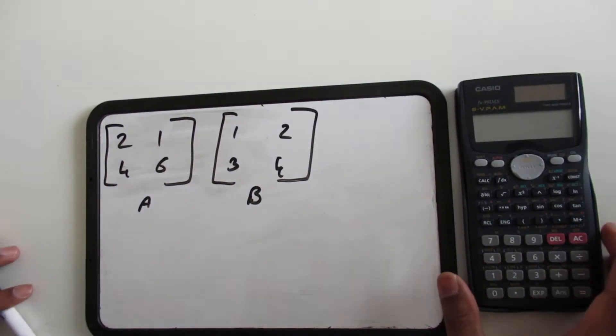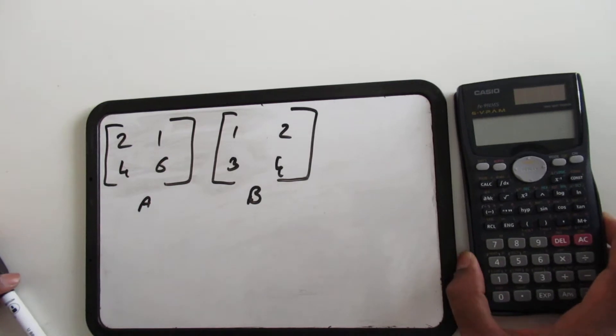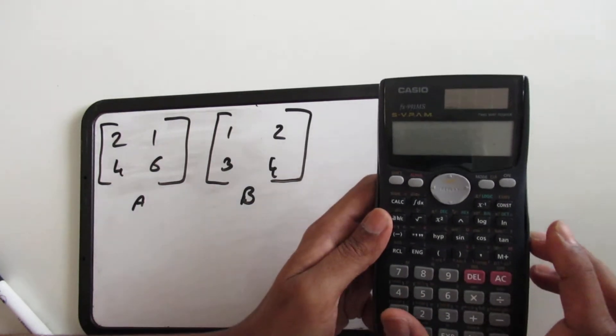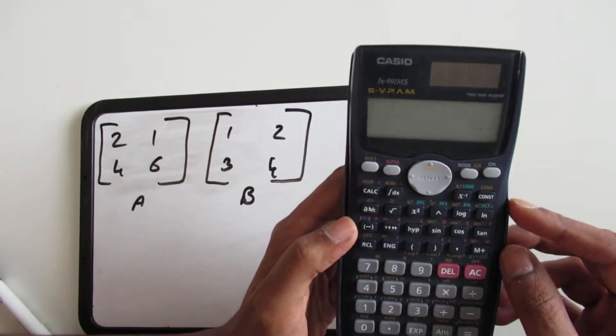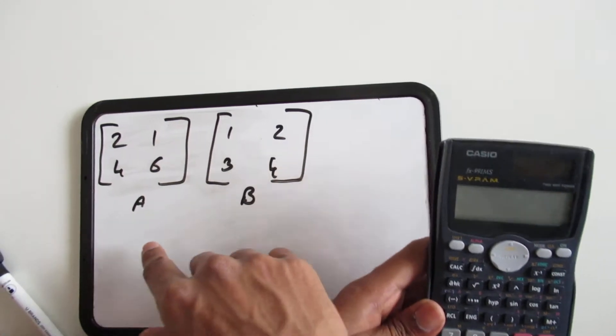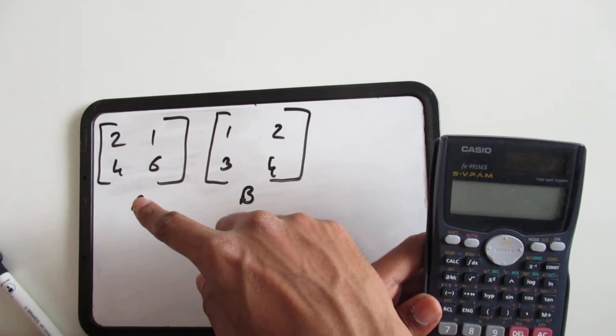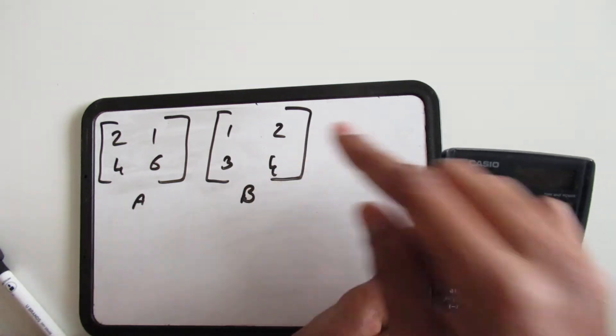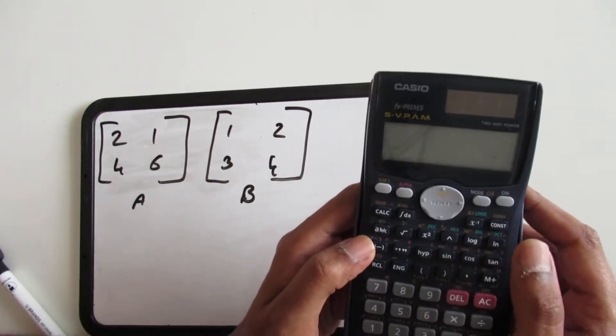Hey guys, today we're going to learn how to operate with matrices in the Casio FX991 MS calculator. I got my calculator here, so we're going to carry out a simple matrix operation. We have matrix A which is 2, 1, 4, 6 and matrix B which is 1, 2, 3, 4. The first step is we're going to input these values into the calculator.